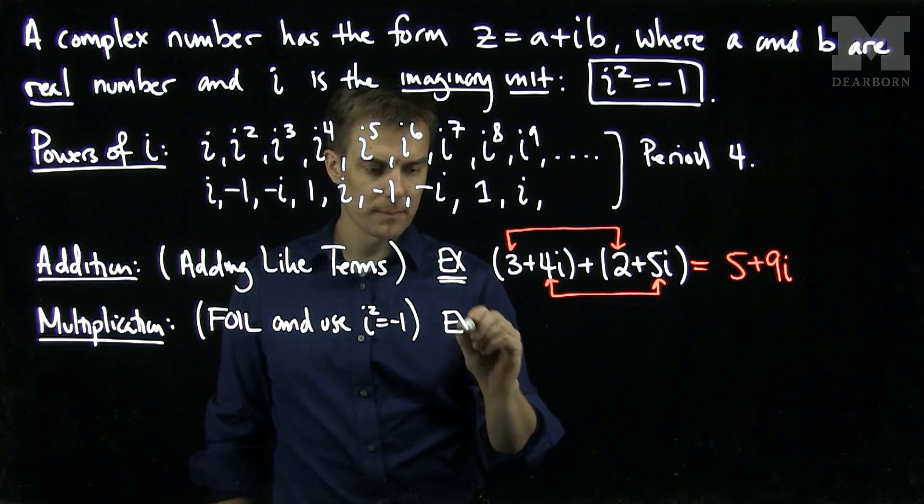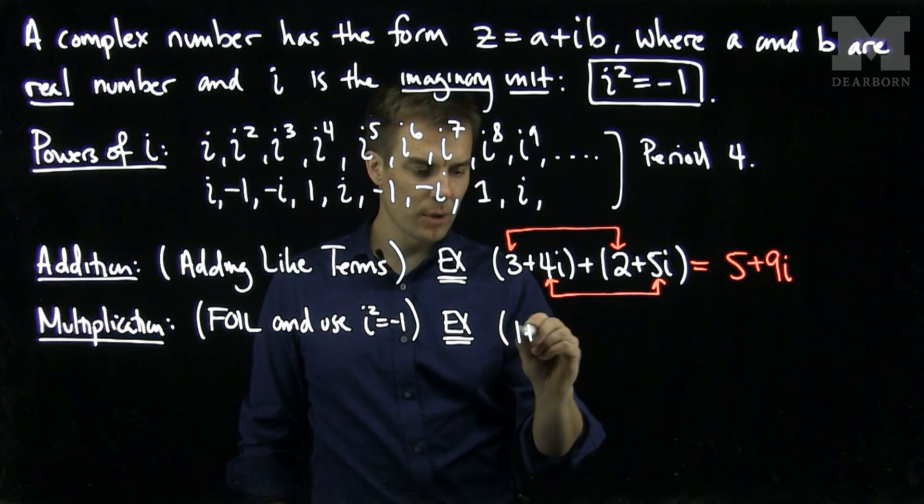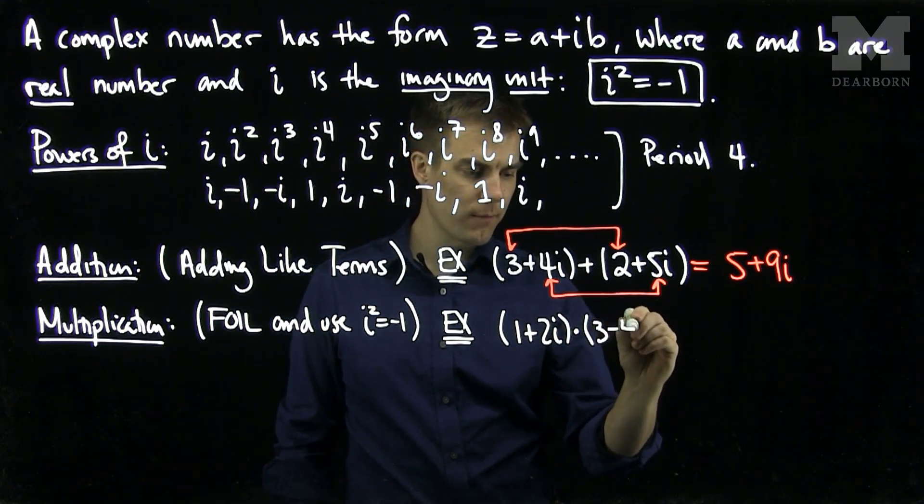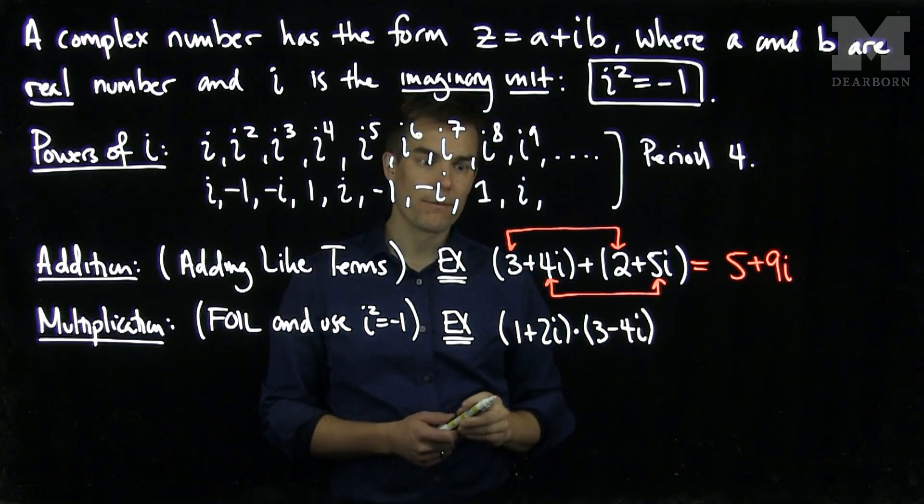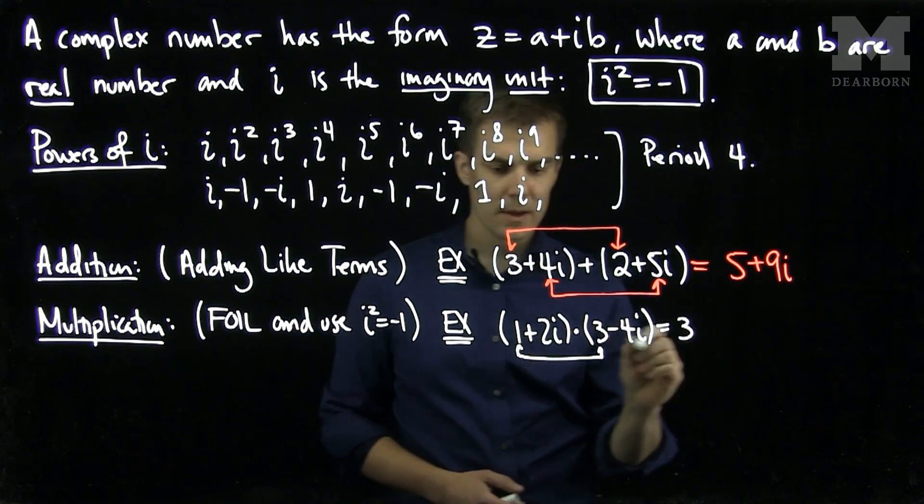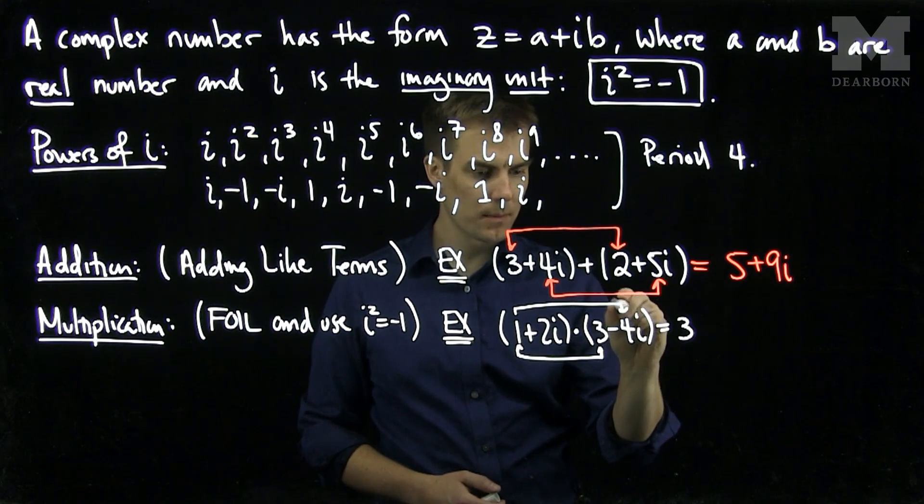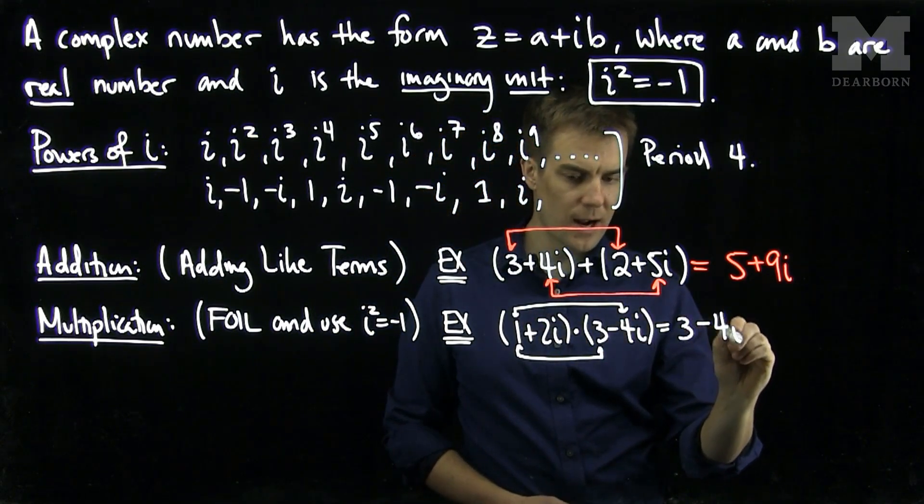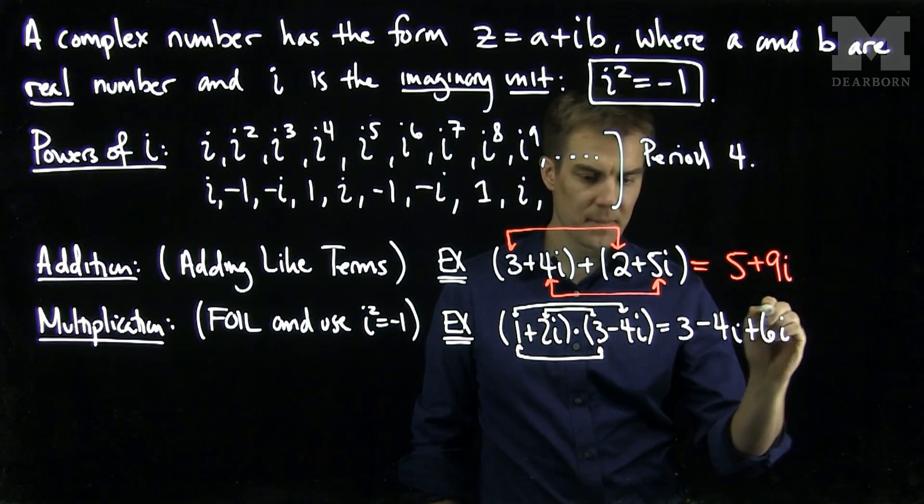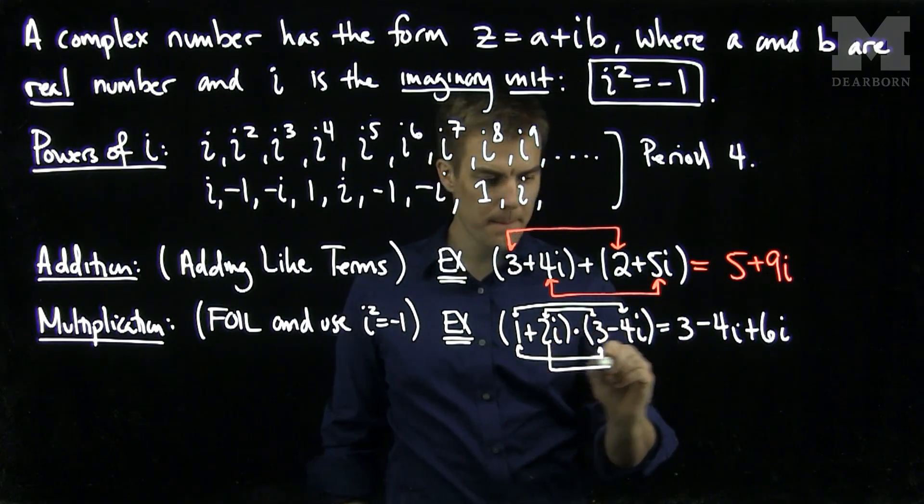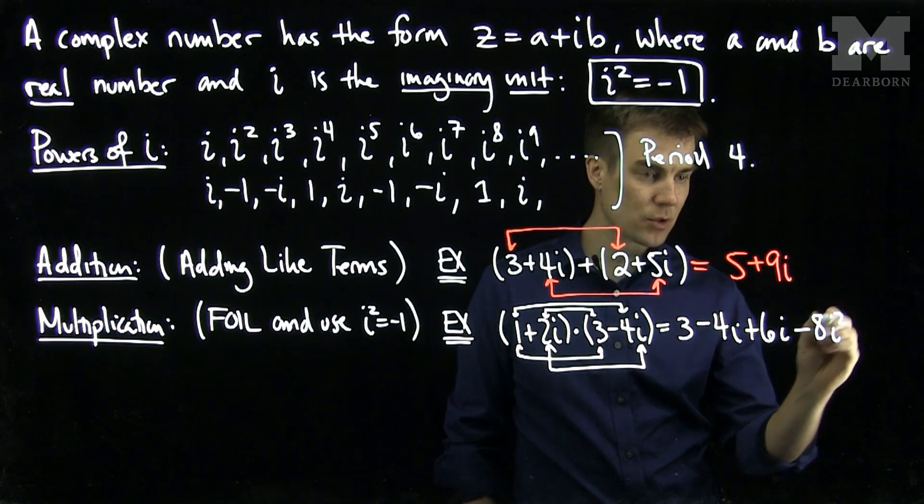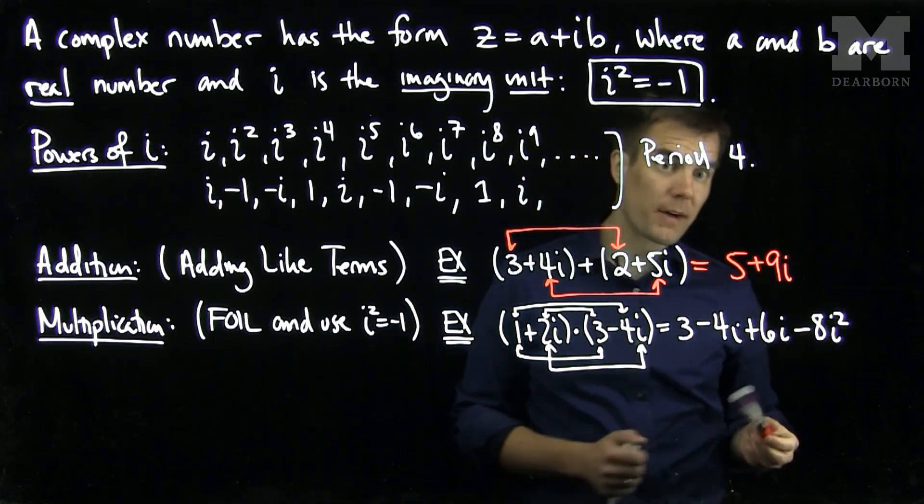Let's do an example. If I'd like to do 1 plus 2i times 3 minus 4i, I will FOIL. I'll do the first terms and get 3. I'll do the outer terms and get a negative 4i. I'll do the inner terms and get a 6i. And I'll do the last terms and get a negative 8i squared.